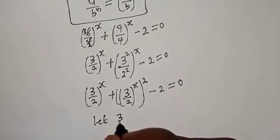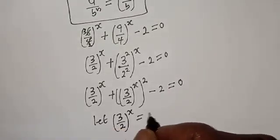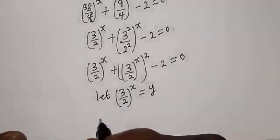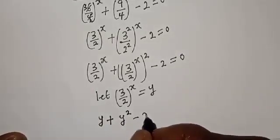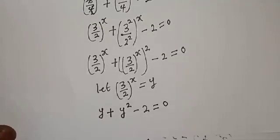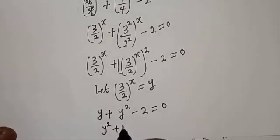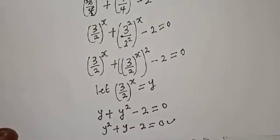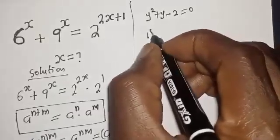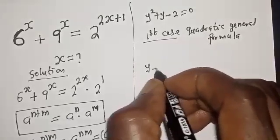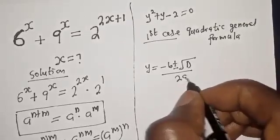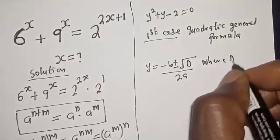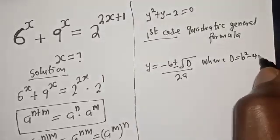Let y equal 3 over 2 raised to the power of s. Rearranging, we have y squared plus y minus 2 equals 0. This is a quadratic equation which can be solved using either the factorization method or the quadratic general formula. Let's consider the first case.